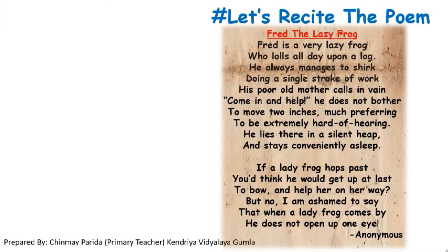We enjoyed the poem a lot. Now let's understand the poem. Stanza 1: 'Fred is a very lazy frog who lolls all day upon a log. He always manages to shirk doing a single stroke of work.' It means the poem begins by telling us about a frog who is pretty lazy. The poet has given the frog the name Fred. We learn about what Fred does all day, and it shows us how the frog wastes his time without doing anything constructive.